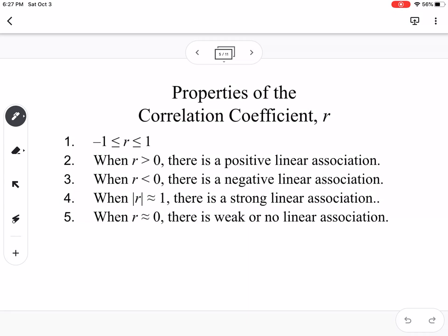So properties of the correlation coefficient r: r is going to land between negative 1 and 1. If r is greater than 0, there's a positive linear association. When r is less than 0, there's a negative linear association. When the absolute value is close to 1, there's a strong linear association. And when it's close to 0, there's weak or no linear association.